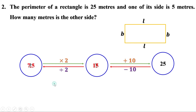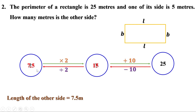The length of the other side is 7.5 meters. Let us check: 2 times the length is 15, and 2 times the breadth is 10. 15 plus 10 is 25, so the result is correct.